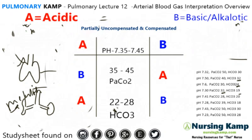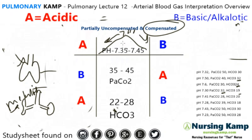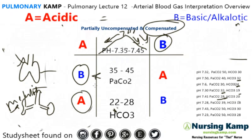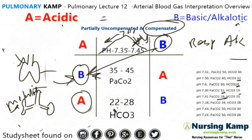Next: pH of 7.41. It's in the middle, defined by 7.40. Whenever it's in the middle, it's compensated — period. It's 7.41, which is closer to the basic side, so we circle there. PaCO2 is 28 and bicarb values are noted. We connect the two together: we have an alkalotic condition in the respiratory area — respiratory alkalosis. But remember the pH was in the middle, so we have compensated respiratory alkalosis.